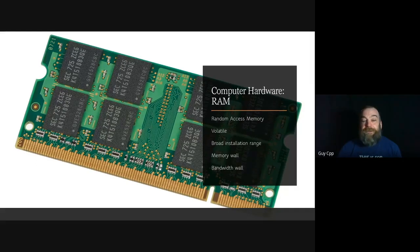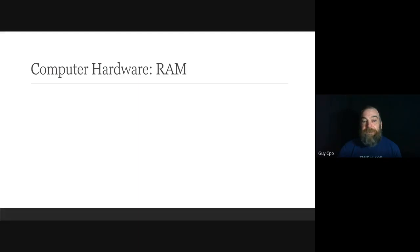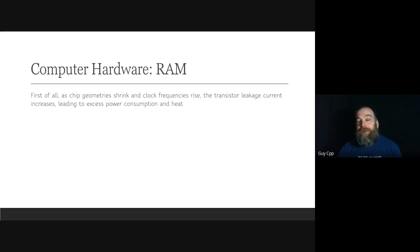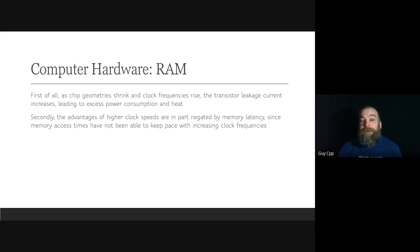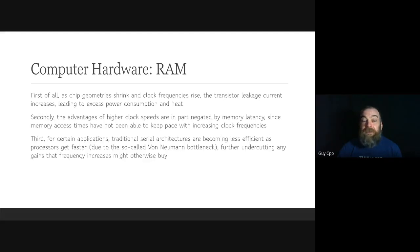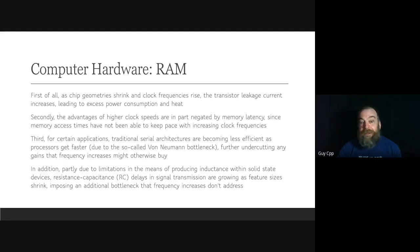CPU speed improvements hit a physical barrier, summarized by Intel in 2005: as chip geometry shrinks and clock frequencies rise, transistor leakage current increases, leading to excess power consumption and heat. Higher clock speeds are partly negated by memory latency, since memory access times haven't kept pace. For certain applications, traditional serial architectures become less efficient as processors get faster — the so-called von Neumann bottleneck — further undercutting gains from frequency increases. Resistance-capacitance delays in signal transmission also grow as feature sizes shrink, imposing an additional bottleneck.